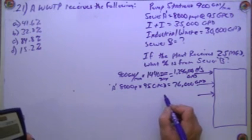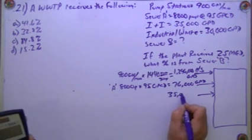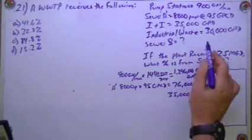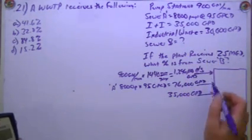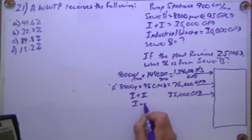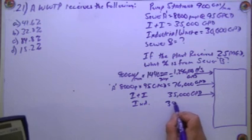And then our next sewer, industrial waste is 35,000, no math needed there. Or I&I is 35,000 and industry gives us 30,000.